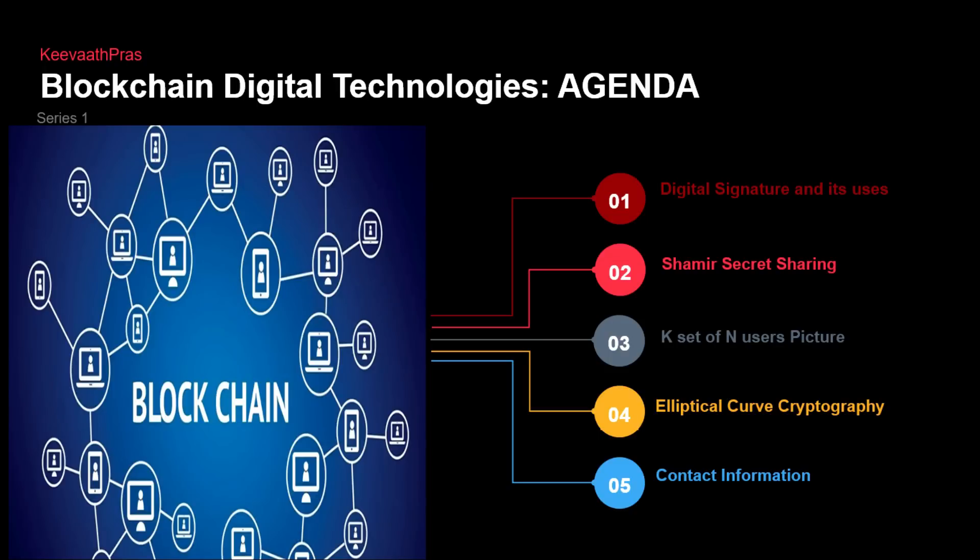Friends, in today's lecture we are going to be seeing about digital signatures and the technologies and uses of digital signatures. We would have actually been used to digital signatures — at least some of us — but probably we don't know what is behind them. We'll see what a digital signature is, what Shamir Secret Sharing is, and elliptic curve cryptography. In this blockchain lecture, we are going to take a deep dive into digital signatures and their uses.